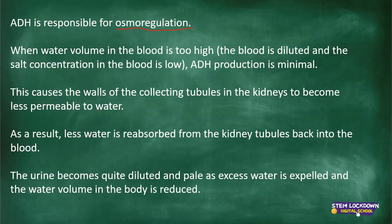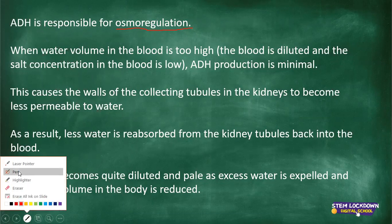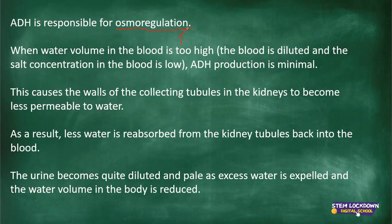The key thing to remember in this process is: when water volume is high, ADH production is low. They have reverse effects on each other — water volume is high, ADH production is low. The ADH and the water factor are inversely related. In osmoregulation we are dealing with water balance and salt concentration in the body, so it is important to understand the hormone responsible for that process.